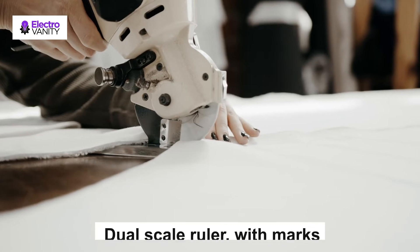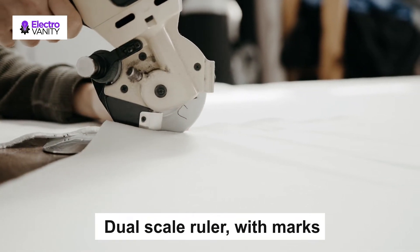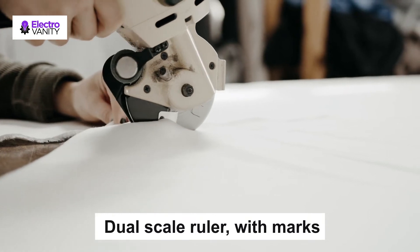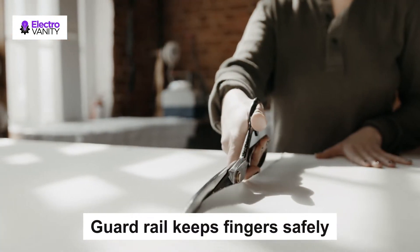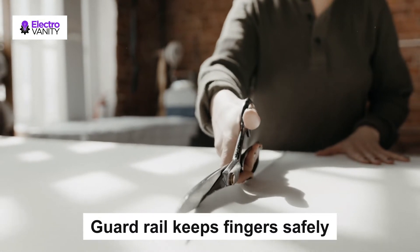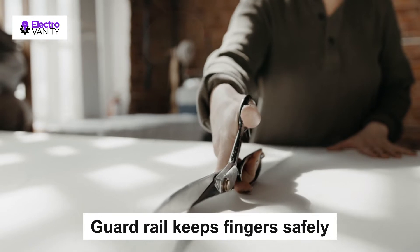Designed for accuracy with an alignment grid for precision. A 12-scale ruler with marks in inches and centimeters assists with measuring, regardless of which system you prefer. Guard rail keeps fingers safely away from the blade while it's in use. Blade latch hook securely locks the trimmer arm when not in use.